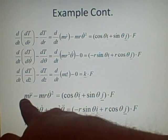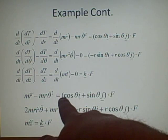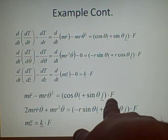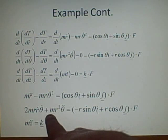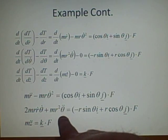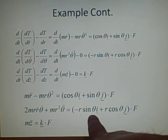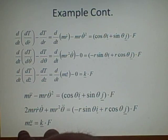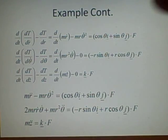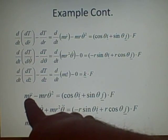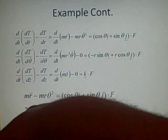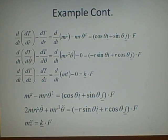Simplifying by evaluating the d over dt terms gives the final equations: m r-double-dot minus m r theta-dot squared equals (cosine theta i plus sine theta j) dotted with f; 2m r r-dot theta-dot plus m r squared theta-double-dot equals (minus r sine theta i plus r cosine theta j) dotted with f; and m z-double-dot equals k dot f. As you can see, all variables r, theta, and z now appear in their second derivative form — r-double-dot, theta-double-dot, and z-double-dot — and you just rearrange to get nicer equations.